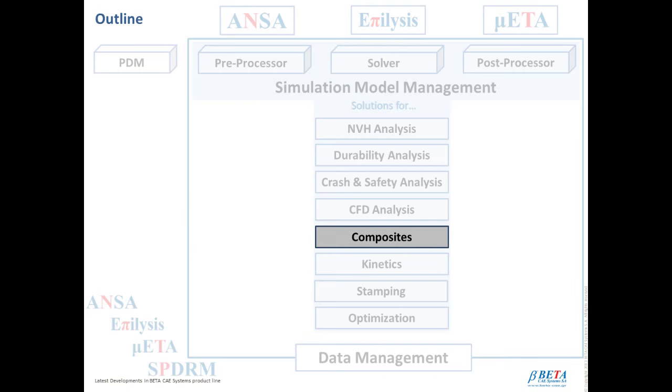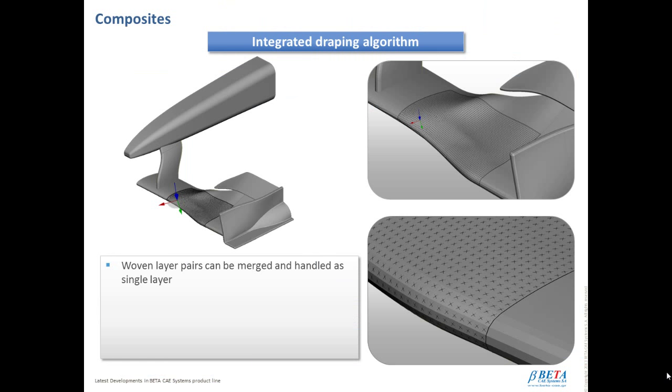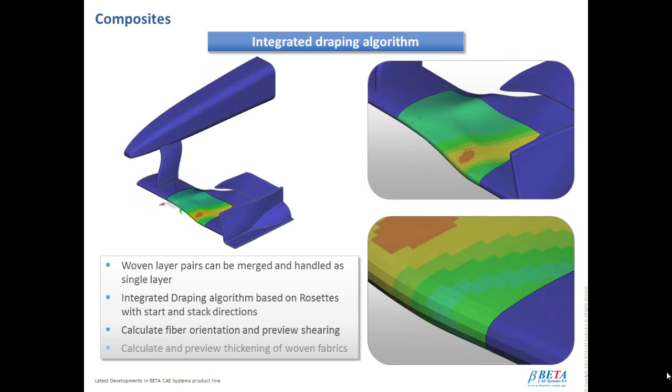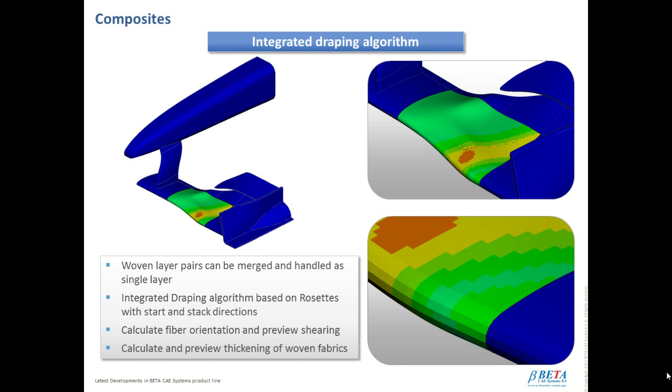New tools for the modeling, simulation, and analysis of the behavior of products made of fiber reinforced laminate composites comes with brand new version 16. Using the laminate tool developed and integrated within ANZA preprocessor, the analyst can master the laminate model to be submitted to the solver. Through the new integrated draping algorithm, woven layer pairs can be merged and handled as a single layer. This integrated draping algorithm is based on rosettes with start and stack directions. Furthermore, it can calculate fiber orientation and preview shearing, as well as calculate and preview thickening of woven fabrics.